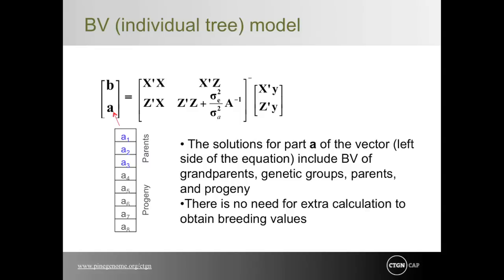Shifting to the individual tree model: when fit, the objective is to obtain breeding values of grandparents, genetic groups, parents, and offspring simultaneously. The A vector now contains values for all genetic groups of interest; BLUP solutions are the breeding values directly — no extra calculation needed. Selection is completed using an index selection strategy, considering both family performance and individual offspring within family with carefully defined weightings, to create advanced breeding populations. This is defined as forward selection. Obtaining genetic values requires full-sieve family structure or cloned progeny.